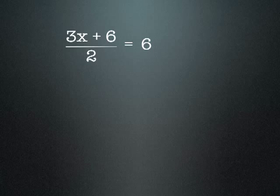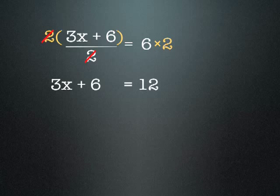Now a slightly harder one: (3x plus 6) over 2 equals 6. This means that x is a number that's been multiplied by 3, had 6 added to it, and then all of that is divided by 2 to make 6. So the first thing we need to undo is the divide by 2. We do the opposite — we times both sides of the equation by 2. On the left we have a 2 on the top line and a 2 on the bottom line, so we can cancel those out. What we're left with is 3x plus 6 equals 12.